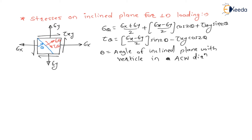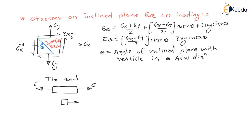This sign convention we have to use here. For 1D loading — let us consider a tie rod. A tie rod is subjected to tensile load sigma. If I consider one small element in this rod, the small element is subjected to unidirectional loading.